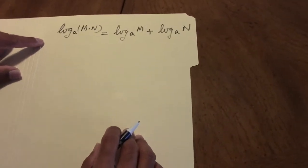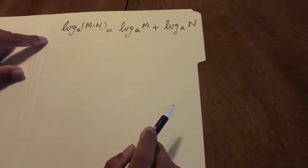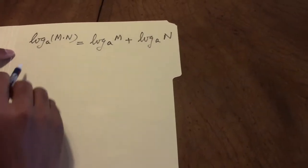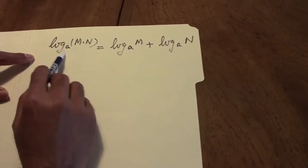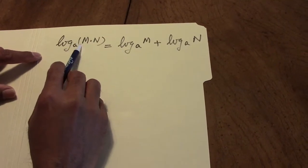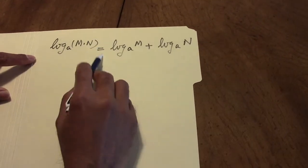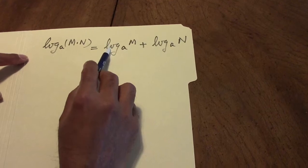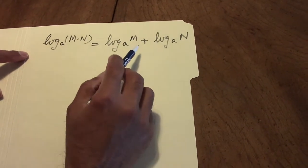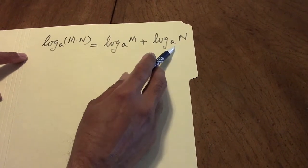We would like to prove this theorem in logarithm that says the log to the base a of m times n equals the log to the base a of m plus log to the base a of n.